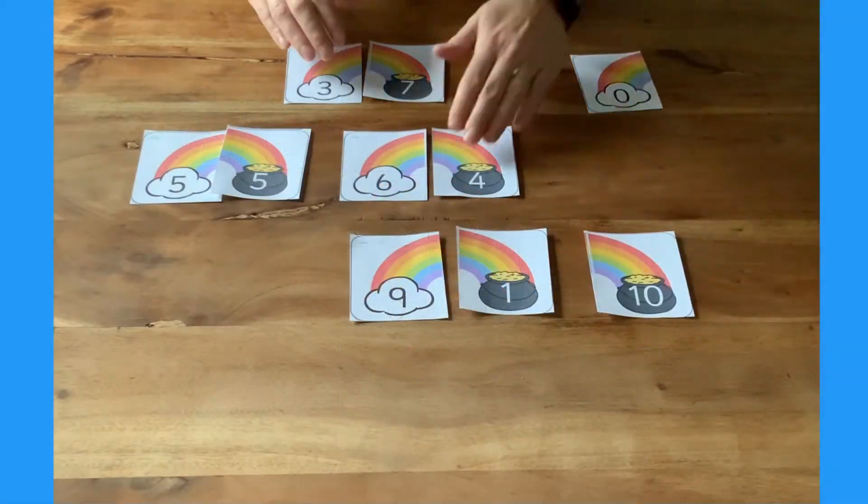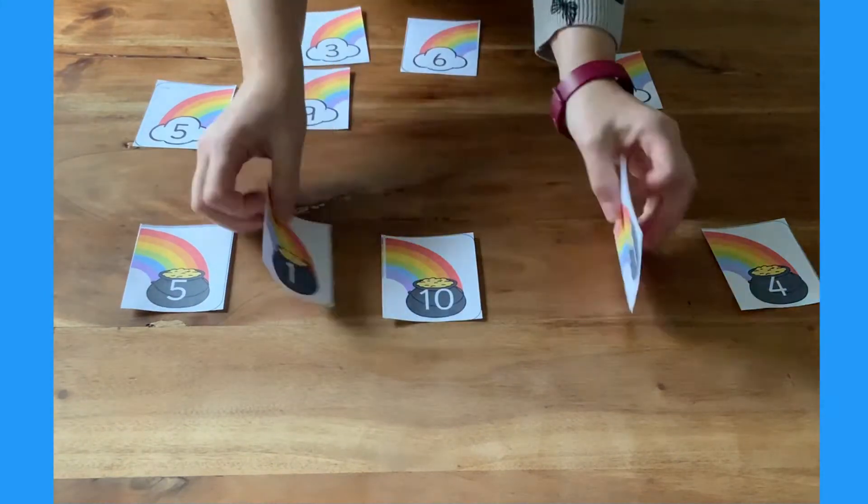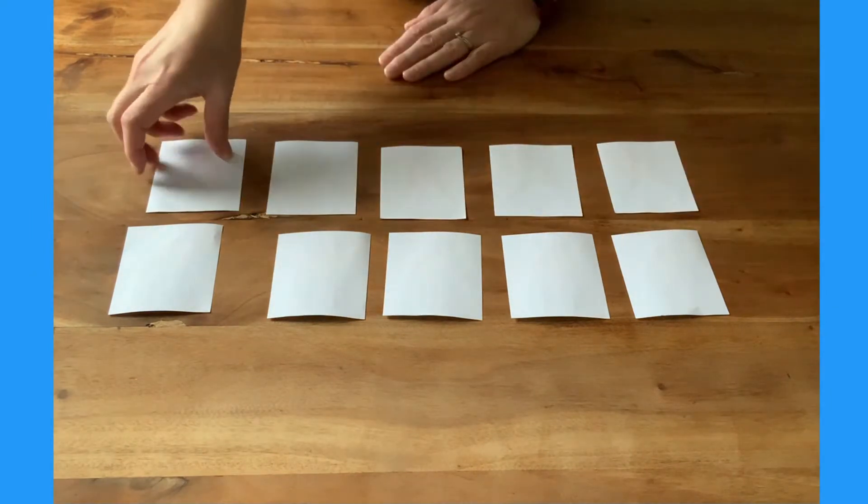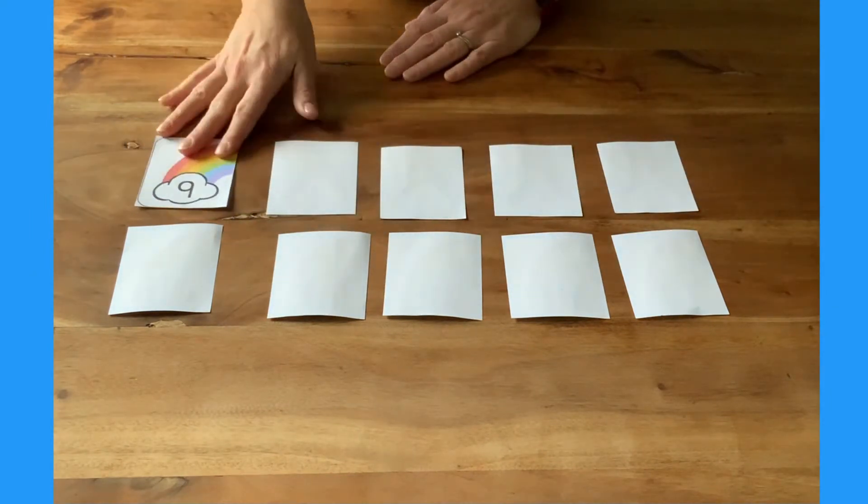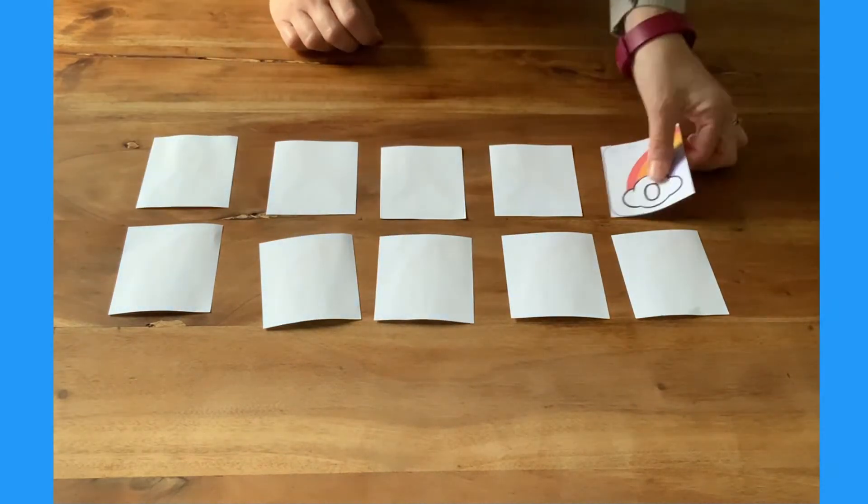Choose a few of the pairs for a memory game. Clouds on the top, pots of gold on the bottom. Mix them up and turn them over. Children can choose one card from the top and one from the bottom. Do they make a number bond to 10 pair? If they don't, turn them back and try again.